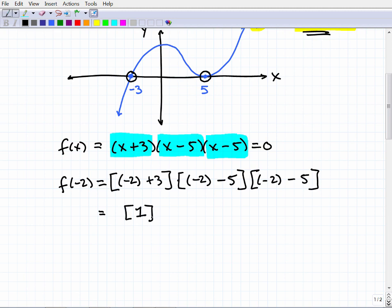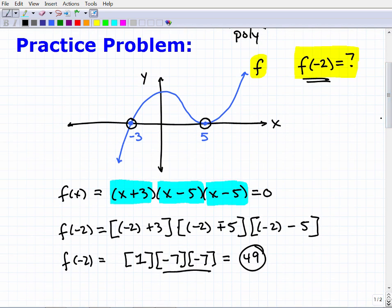Let's calculate this out. Negative 2 plus 3 is just 1, so this is 1. Negative 2 minus 5, or plus negative 5, is negative 7. That's multiplied by another negative 7. So f of negative 2 is 1 times negative 7 times negative 7. Negative 7 times negative 7 is positive 49 times 1, so it's 49. That's our answer.